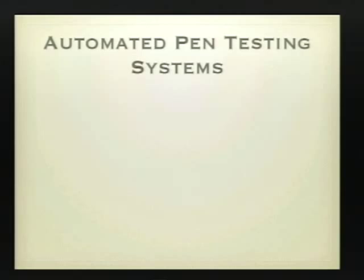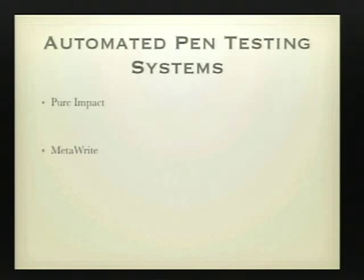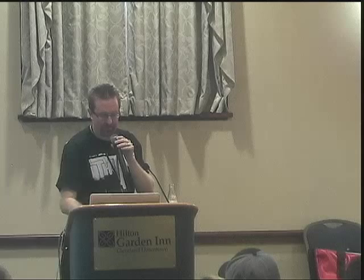Any discussion of pen testing would not be complete without talking about automated pen testing systems. Of course, there's the famous one for its price and being first on the market: Pure Impact. There's also the MetaWrite project, an open source toolset with its awesome image. And they've started to commercialize it with MetaWrite Express and MetaWrite Pro, as they offer more GUI-based hands-on capabilities to the pen testing framework. My wife and I have been working on something and we have invented our own automated pen testing system — this is the first prototype. Later on, we'll be selling t-shirts online with this design.